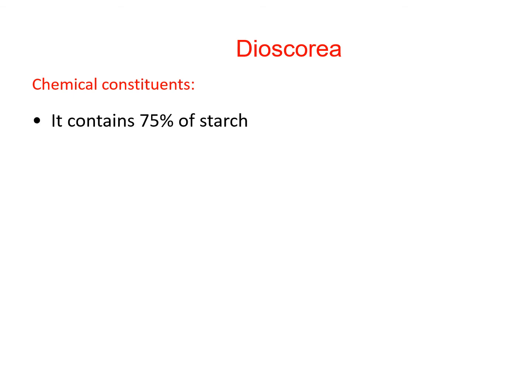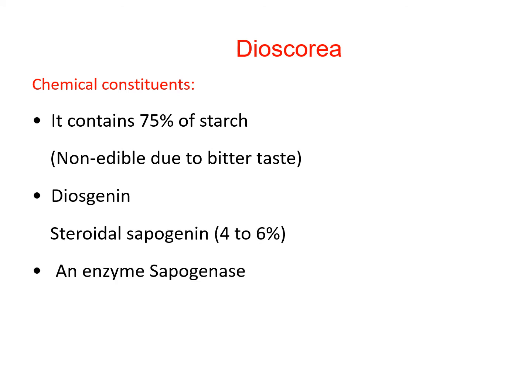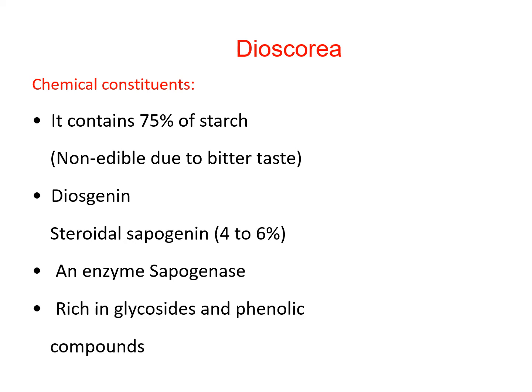Chemically, Dioscoria contains about 75% non-edible starch, which is non-edible due to its bitter taste. It also contains diosgenin, which is a steroidal sapogenin at 4-6%, and an enzyme called sapogenase is also present. Dioscoria is rich in glycosides and phenolic compounds.